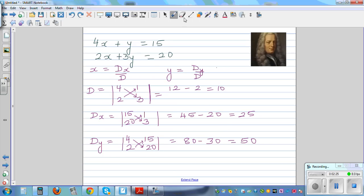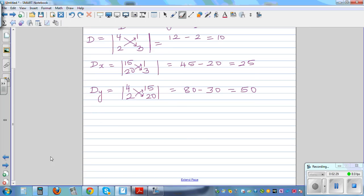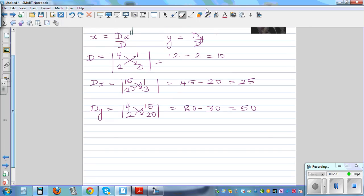Okay, so let's use the formula. What does it say? The formula says x is dx over d. A determinant of x over the determinant. So what is dx? dx is 25 over 10, which is 2.5.